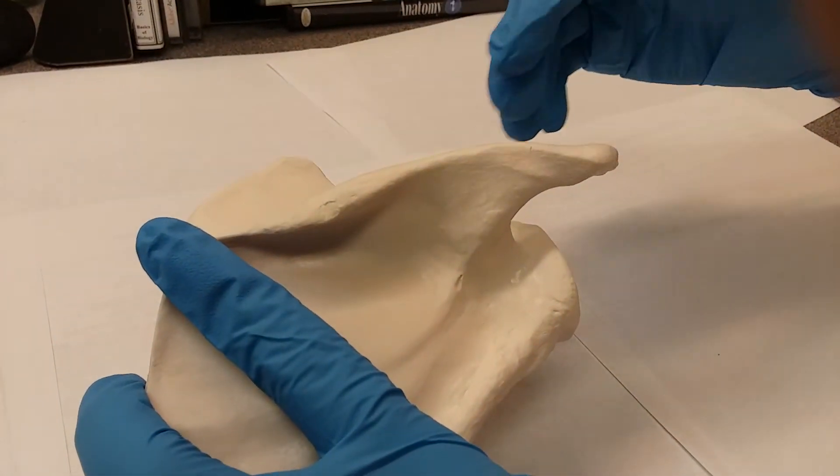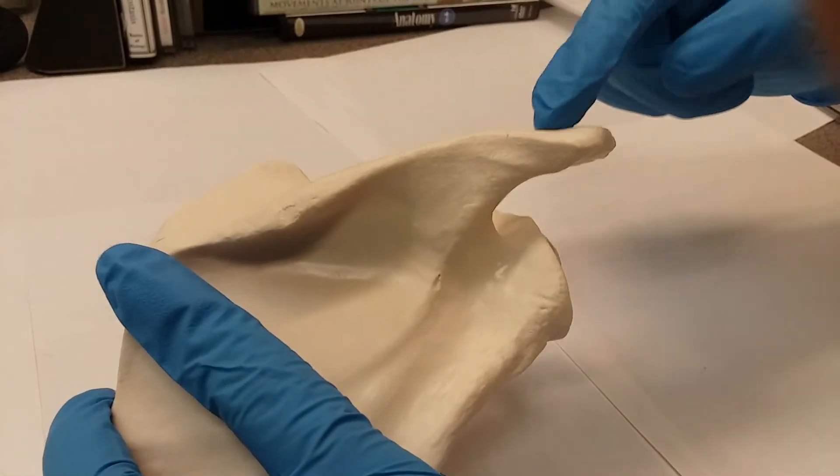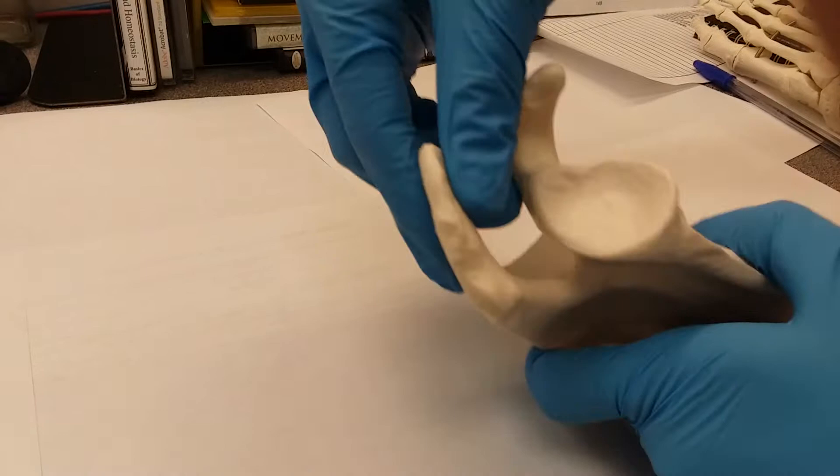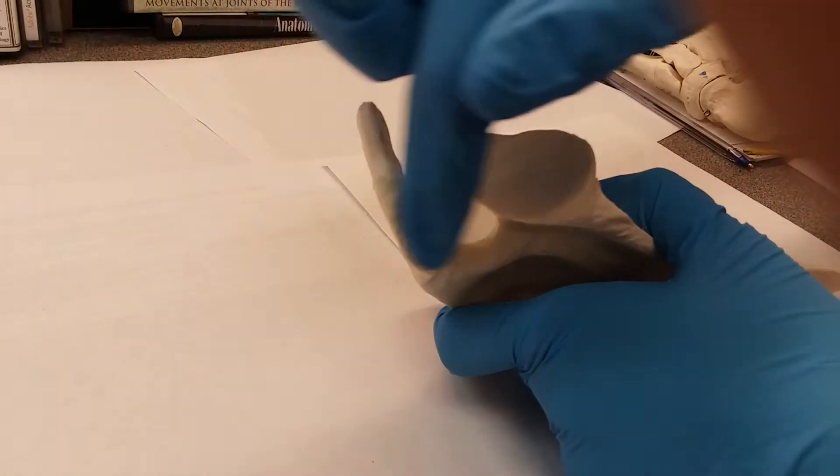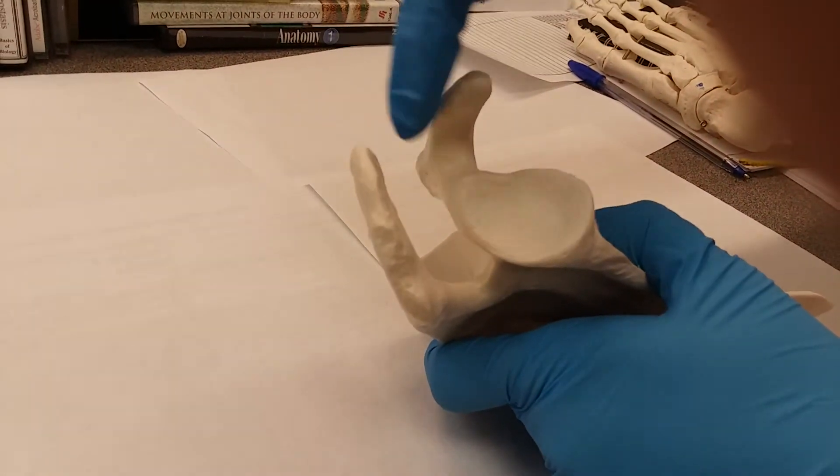And on the posterior side, you're going to see your acromion process. So let me rotate this so it's a little easier to see. Your acromion process, your coracoid process.